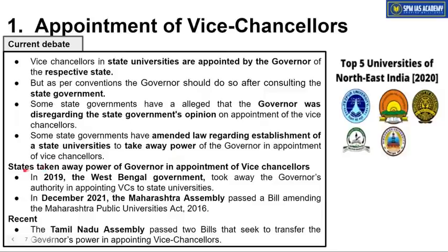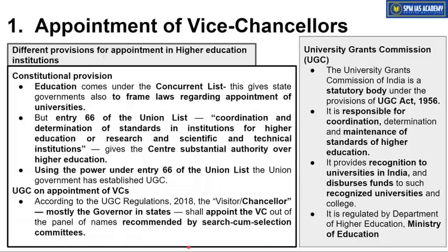Isliye kai saare states ne apne apne state law ko change kar diya hai regarding appointment of vice chancellors. For example, in 2019 West Bengal government took away the governor's authority in appointing vice chancellors. In 2021 Maharashtra Assembly passed a similar bill to amend Maharashtra Public Universities Act 2016 to take away the power of governors regarding appointment of vice chancellors. And recently — jis kaaran se hum ye article cover kar rahe hain — it is because of Tamil Nadu Assembly, which has passed two bills that seek to transfer governor's power in appointment of vice chancellors.